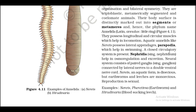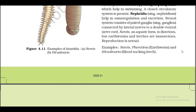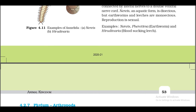Aquatic annelids like Nereis possess lateral appendages, parapodia, which help in swimming. A closed circulatory system is present. Nephridia help in osmoregulation and excretion. The neural system consists of paired ganglia connected by lateral nerves to a double ventral nerve cord. Nereis and aquatic forms are dioecious, but earthworms and leeches are monoecious. Reproduction is sexual. Examples: Nereis, Pheretima (earthworm), and Hirudinaria (Figure 4.11).